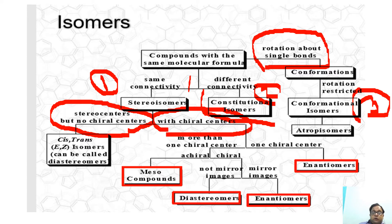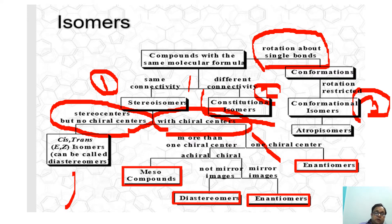Molecules that exist with chiral centers may be enantiomers, may be diastereomers, or may be meso compounds. But molecules that have no chiral center generally exist as diastereomers, and these compounds are mainly considered as cis-trans or E-Z isomers.